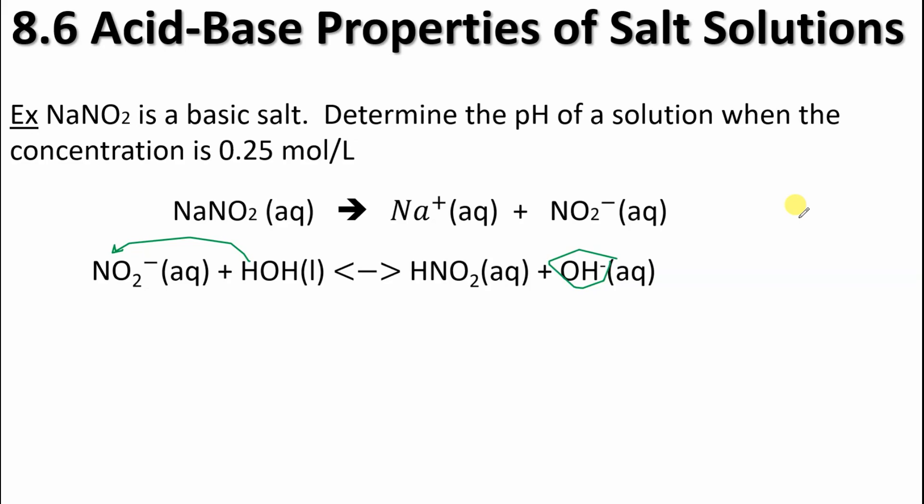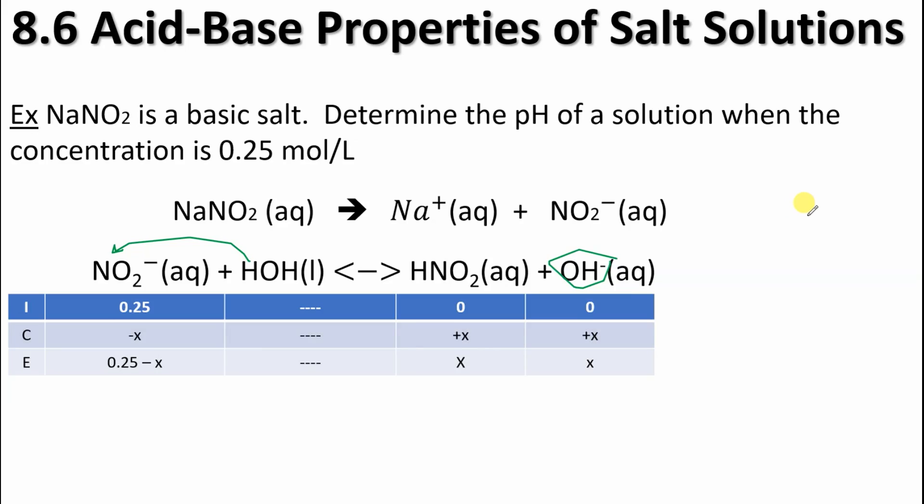Ice chart is going to be the next thing here. And here is our ice chart. Let's not forget, we've got 0.25 for our concentration, so that's why that is going there. At equilibrium, the two products are going to increase, plus X, and of course this one's going to decrease. And we've got our expression.